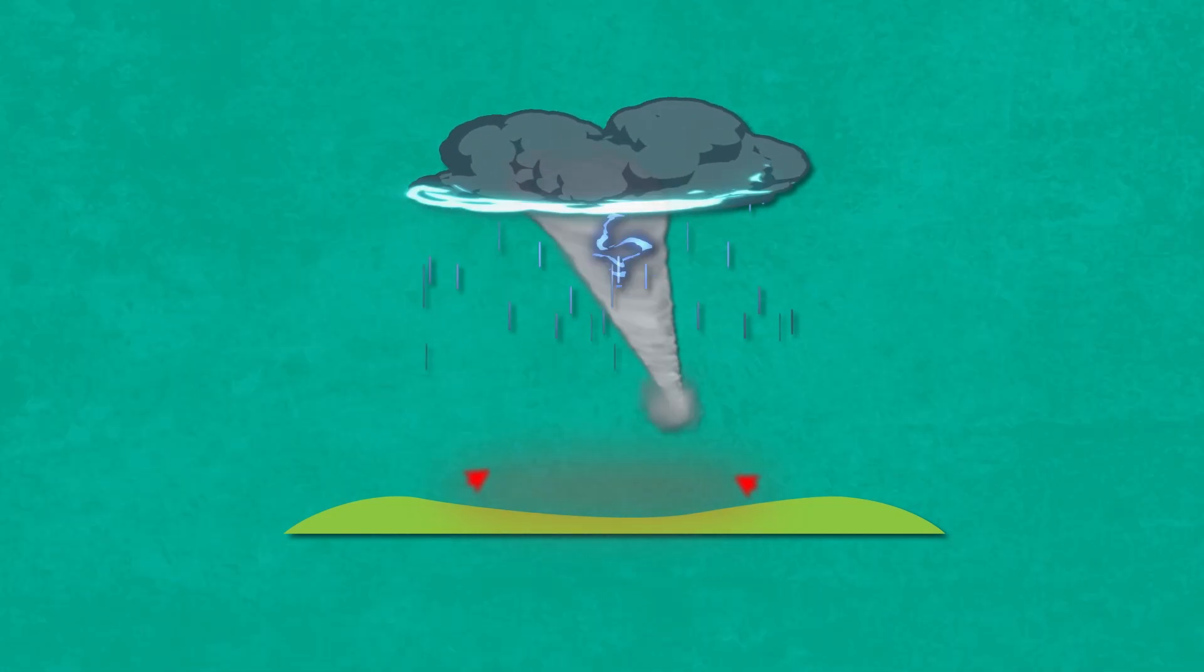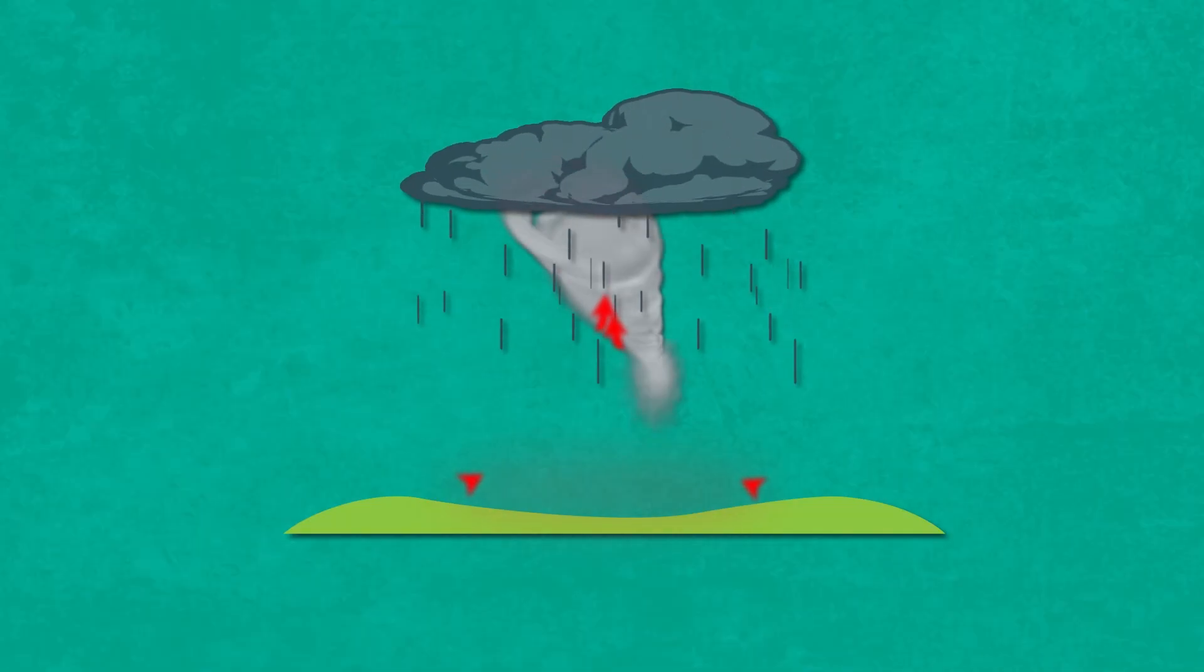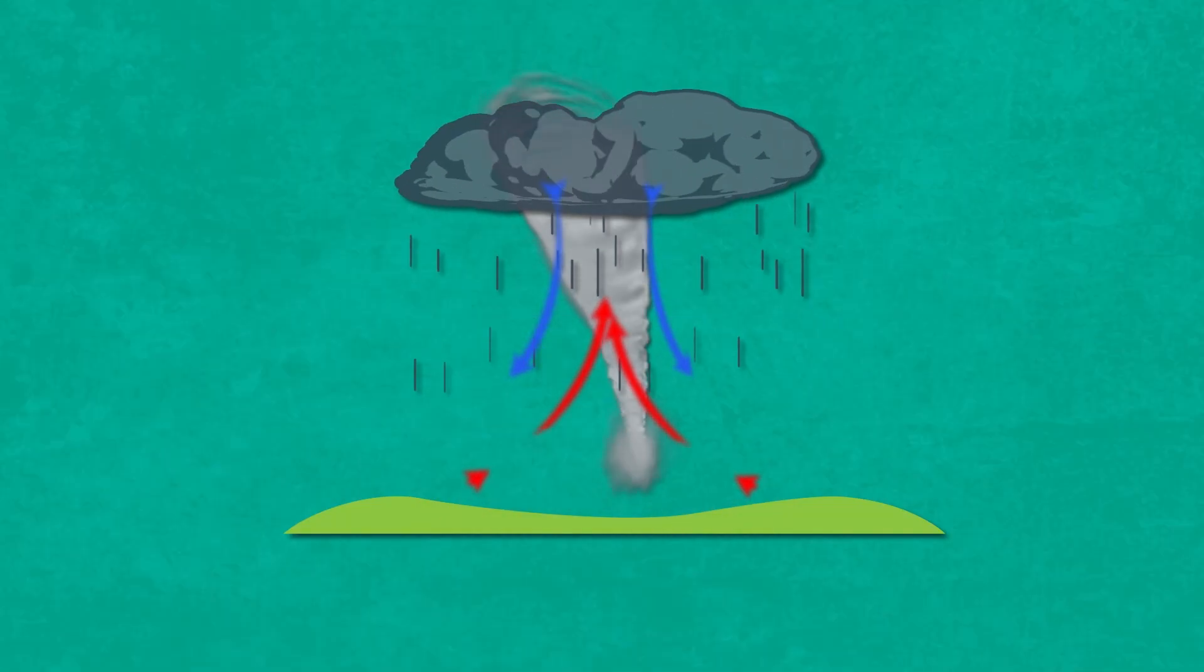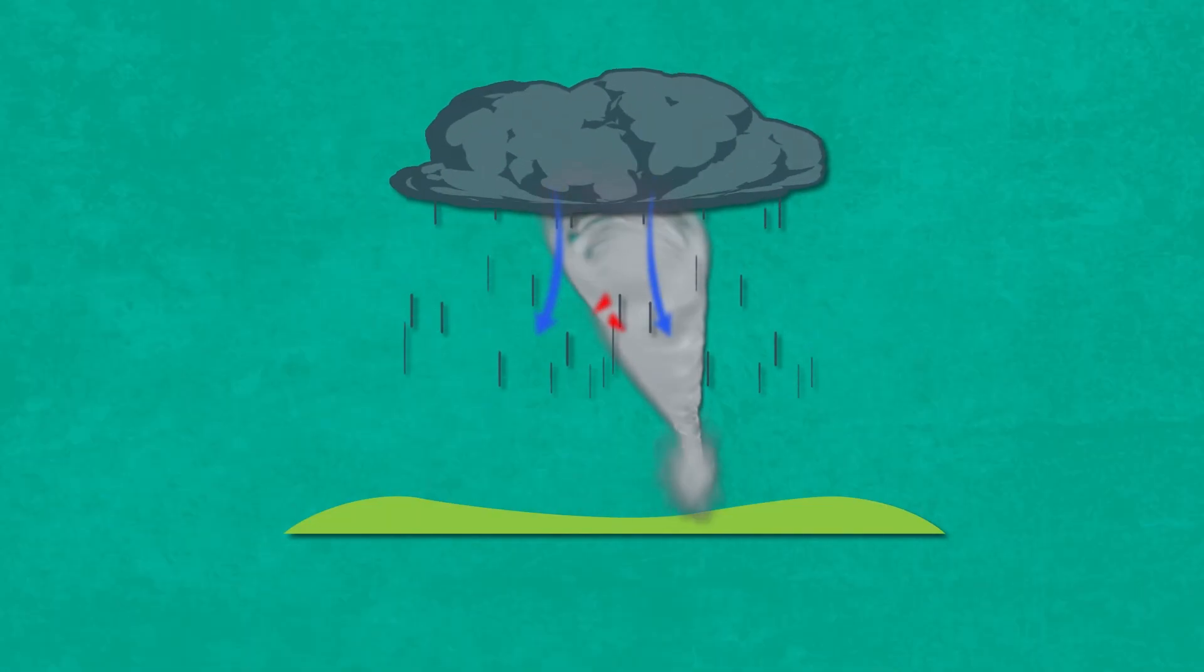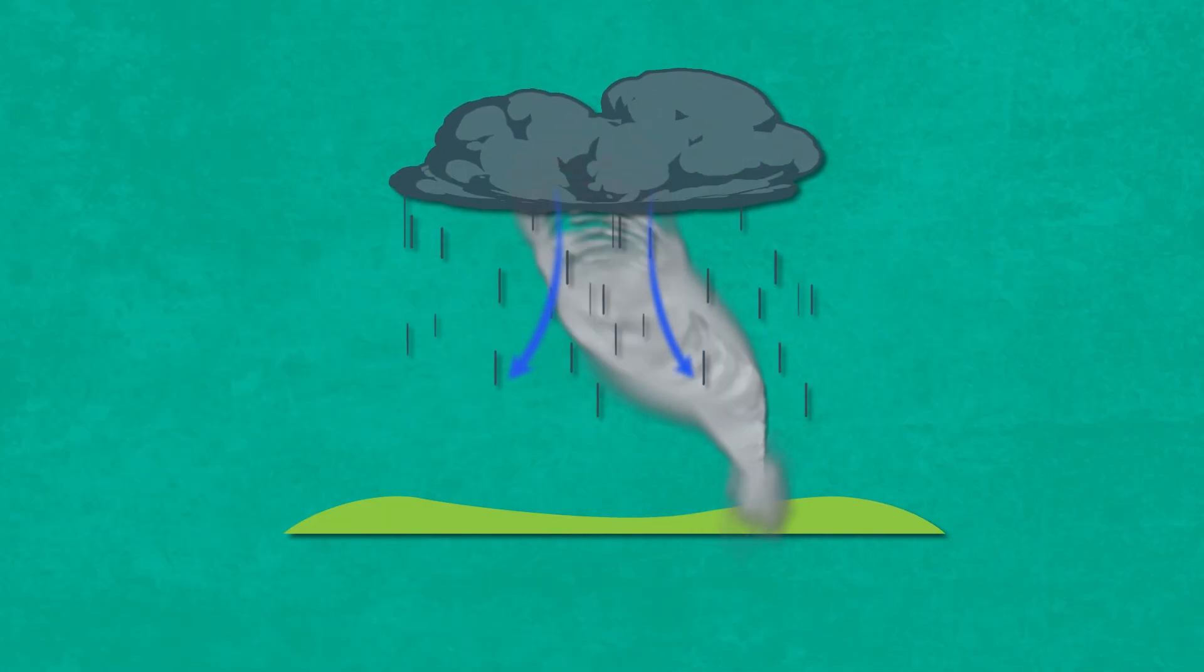At this stage, we still don't have a tornado, but we're getting awfully close. When the weight of the downdraft of dry, cool air becomes too much, the funnel cloud is forced into touching the ground. Now, we have a tornado.